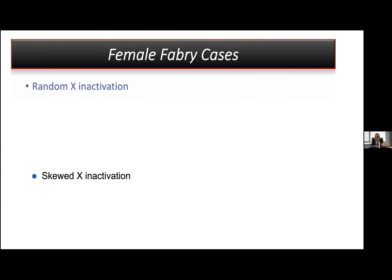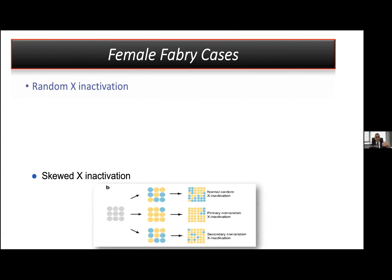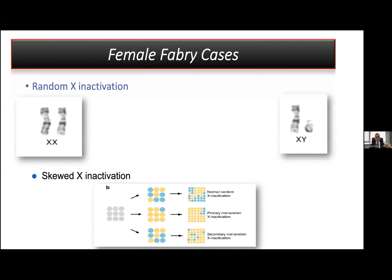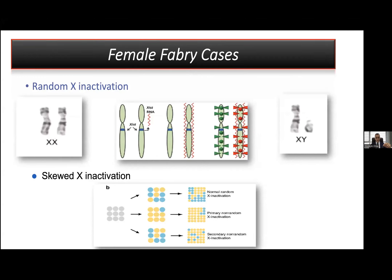In 95% of female Fabry cases, the problem is skewed X inactivation. X inactivation is a normal process that establishes genomic balance between males and females. In normal females, it must be random, but in Fabry disease we are seeing skewed X inactivation, though we do not know the exact pathology.